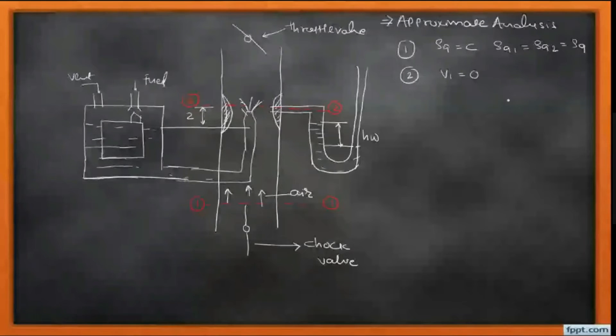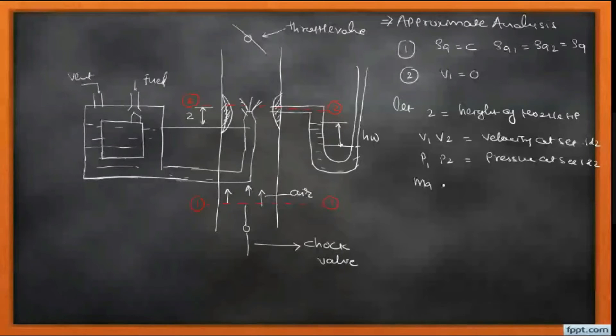Here we have two different fluids: one is fuel and the second is air. We have some parameters. Z is the height of authority. V1 and V2 are the velocities. P1 and P2 are the pressures at section 1 and 2. MA and MF are the mass flow rates.